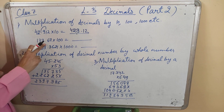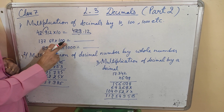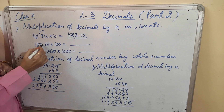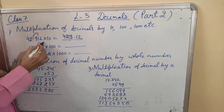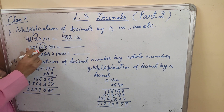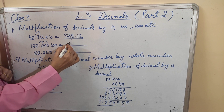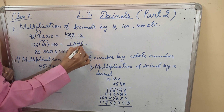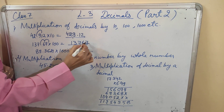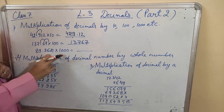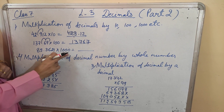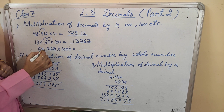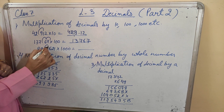Similarly, when we multiply by 100, the decimal has to move right 2 digits. And when we multiply by 1000, the decimal has to move towards the right side 3 digits.